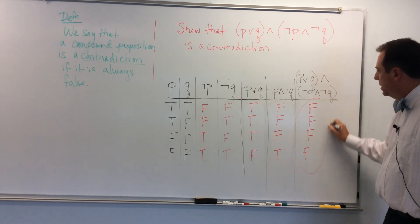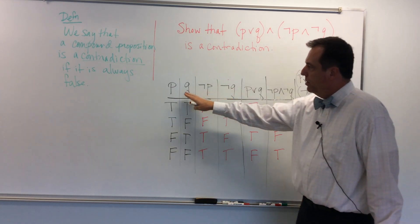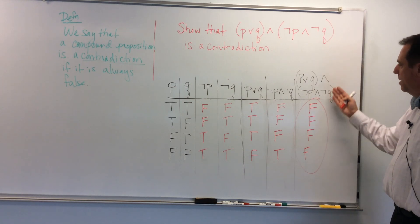So what we've done is shown that we do have a contradiction because no matter what my truth values are for P and Q, I always end up being false.